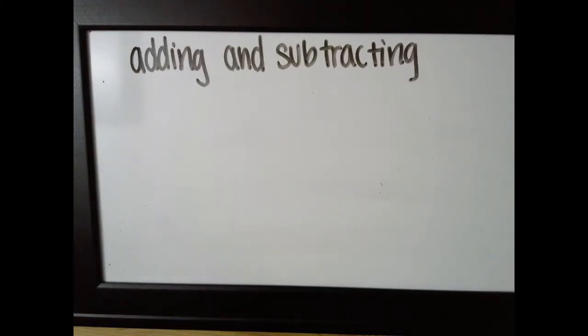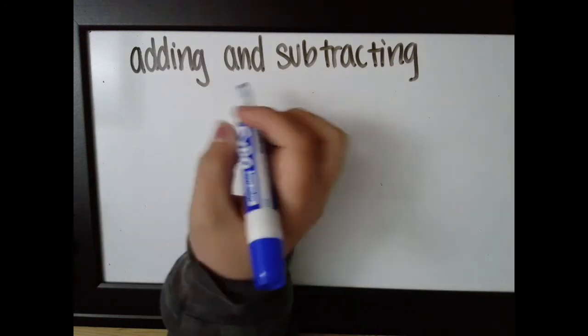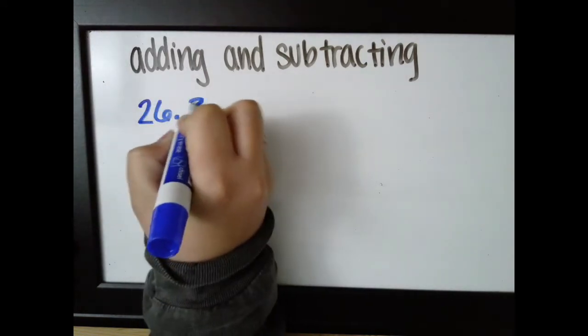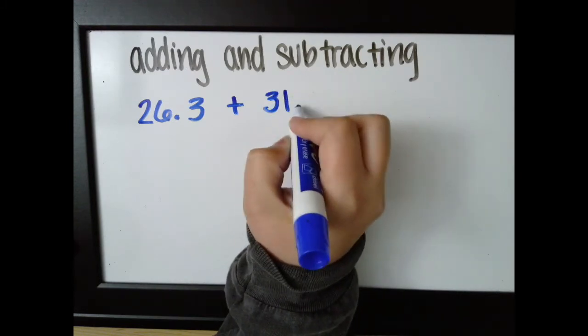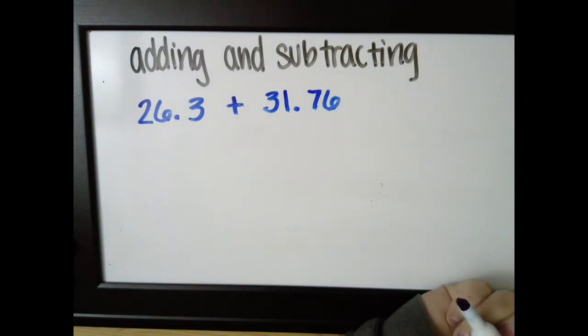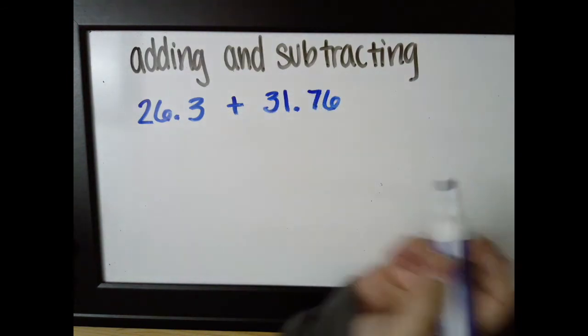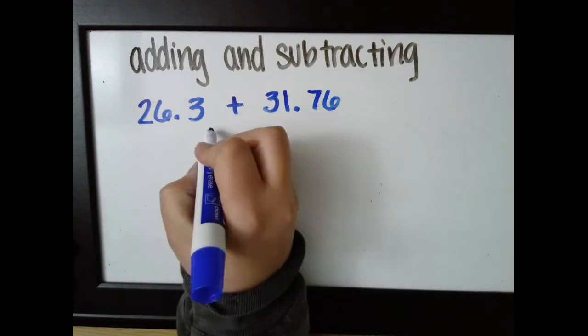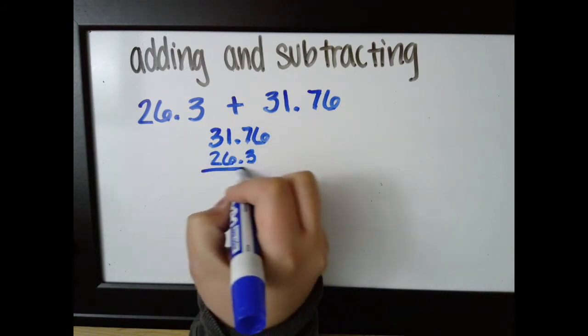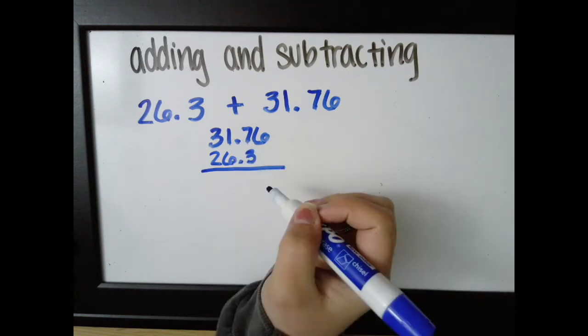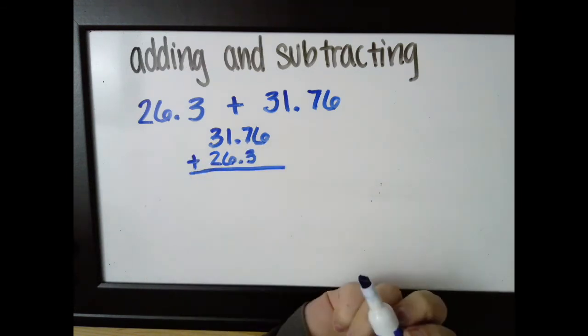Adding and subtracting decimals is just as easy as adding and subtracting that you've been doing since you started school. The only thing that changes is that they have to line up. For example, 26.3 plus 31.76. I'm going to want to line these up when I stack them. I'm going to stack them so that the decimals line up. Always stack so that you can easily see your work.